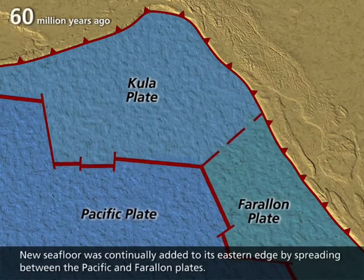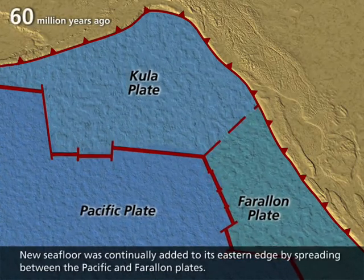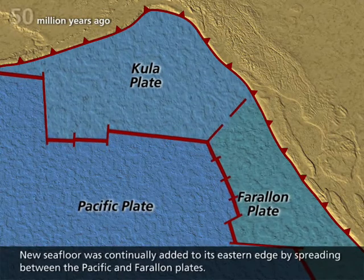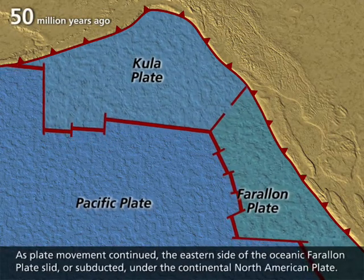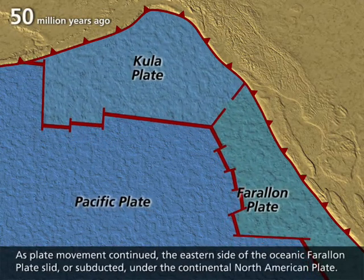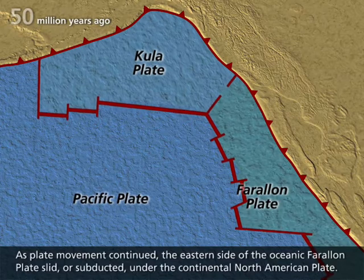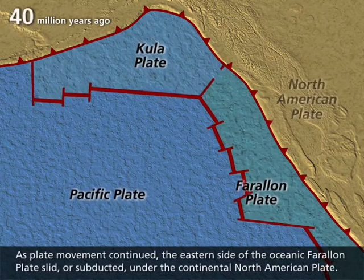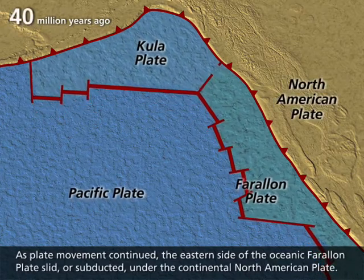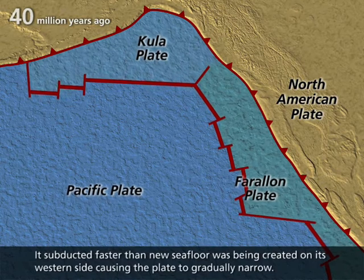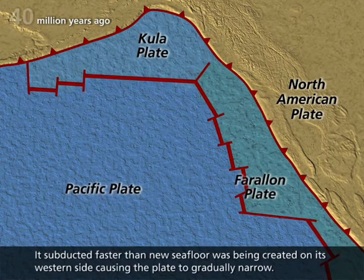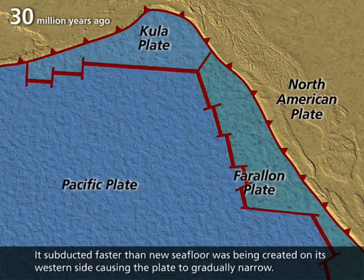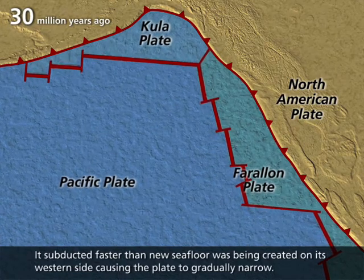New seafloor was continually added to its eastern edge by spreading between the Pacific and Farallon plates. As plate movement continued, the eastern side of the oceanic Farallon plate slid or subducted under the continental North American plate. It subducted faster than new seafloor was being created on its western side, causing the plate to gradually narrow.